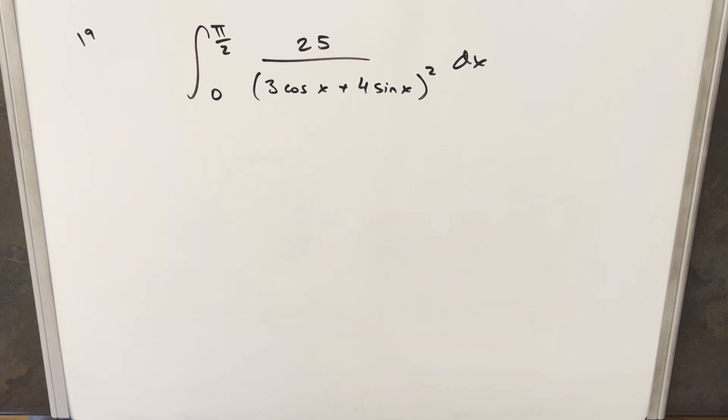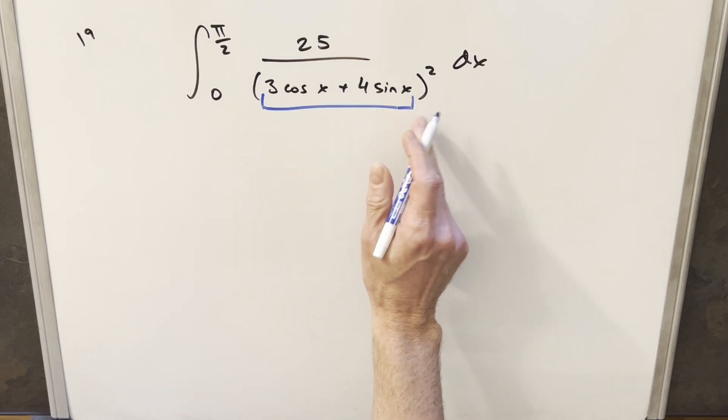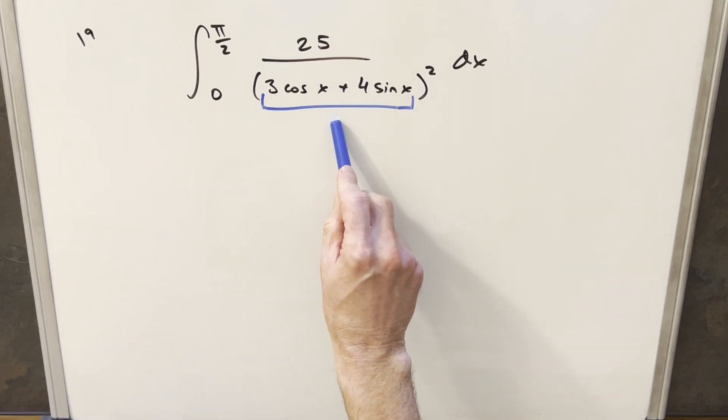Okay, this is actually a problem I just did, but I wanted to do it again using an alternative method. Now in the other video what I did is I took what we have here inside the parentheses, and I just rewrote this using the angle difference formula for cosine.